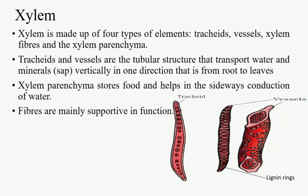As we can see in the image, there are tracheids and two images of vessels showing lignin rings. Lignin is present in the cell wall of sclerenchyma. Fibers are mainly supportive in function and are also known as sclerenchyma. The main function of xylem is conduction of water and minerals — that is, transporting sap — in the upward direction.